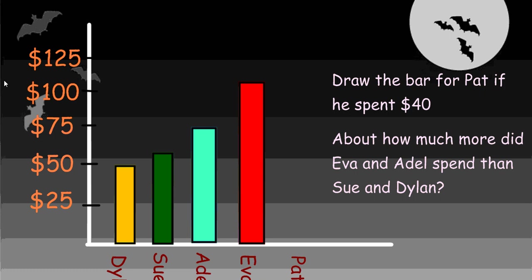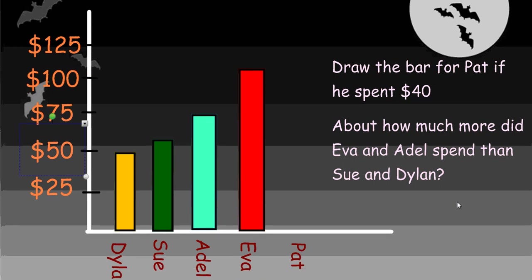Next, we can see that this bar graph is a little bit different. The last one was labeled by twos on the side, but sometimes our interval - and that's the amount between each number on the side - may have to be a little bit higher if it's going up to a higher number. We wouldn't want to label all the way from one to $125 because that would take forever. So we might use the interval of 25 here. Can you draw a bar for Pat if he spent $40? Go ahead and try to do this on your own. In a little bit, we'll check over it.